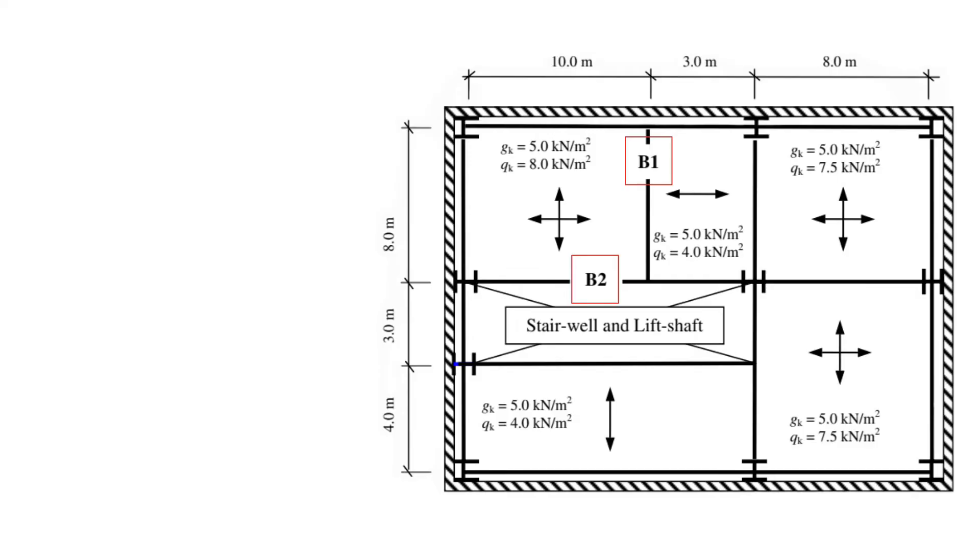Now let's talk about beam B1. Imagine it's holding up a part of the building floor. Some of this floor is spread out evenly, and that's what we call the uniformly distributed load. The other part of the floor is not spread out so evenly. It's heavier on one side, kind of like a triangle shape of weight. This is our triangular load.